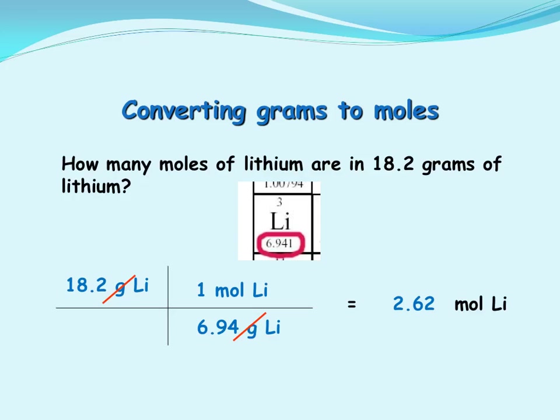Since our conversion factor is moles per gram or grams per mole, we put one mole of lithium on the top. The math is that we will take 18.2 times 1 divided by 6.94 grams. Our final answer is stated to three significant digits because our initial given information was in three significant digits. In this case, the answer is 2.62 moles of lithium.